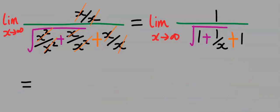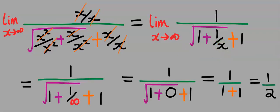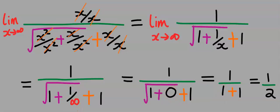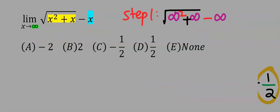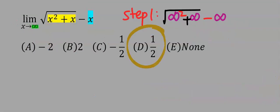I'm going to replace x with infinity. Substituting for infinity, one over infinity is zero, and one plus zero is one. Our answer is one over two, and from the options our answer is D.